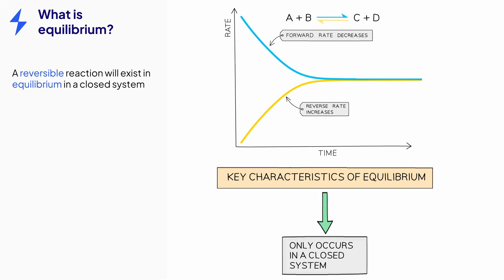The rate of the reverse reaction will increase as the amount of product builds up, as shown by the yellow line. Eventually, the rate of the forward reaction will equal the rate of the reverse reaction. We say that the reaction has reached equilibrium.